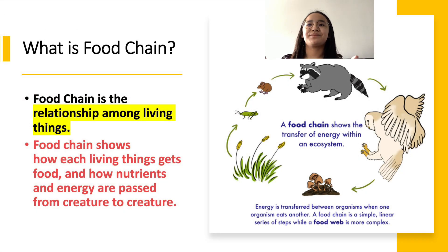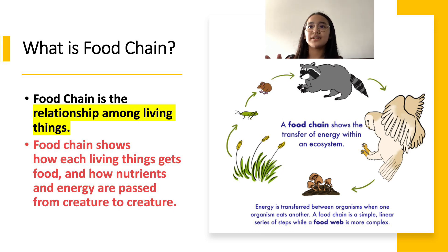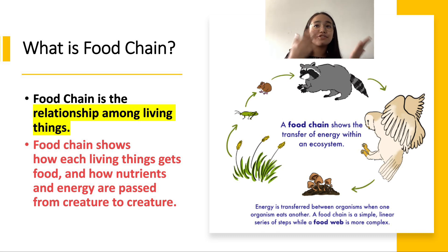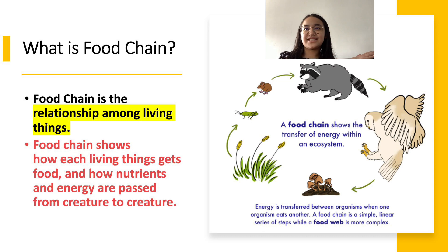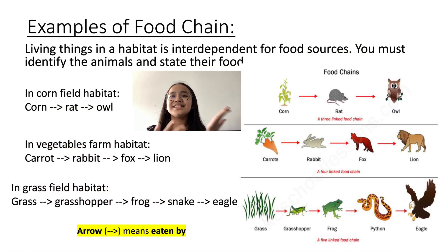So what is a Food Chain? A Food Chain is the relationship among living things. It shows how each living thing gets food and how nutrients and energy are passed from creature to creature. The picture shown is an example of a Food Chain. Now let's see some examples of Food Chain.